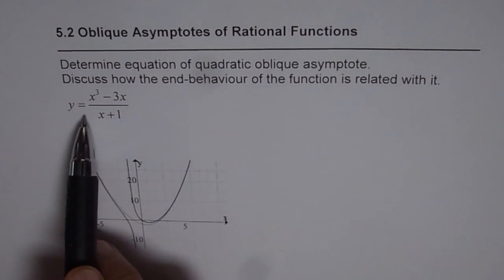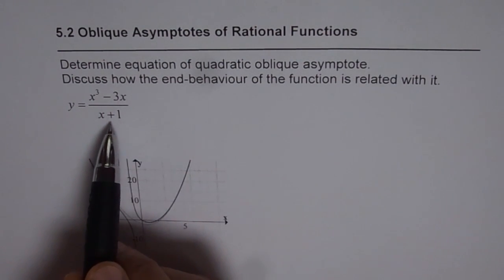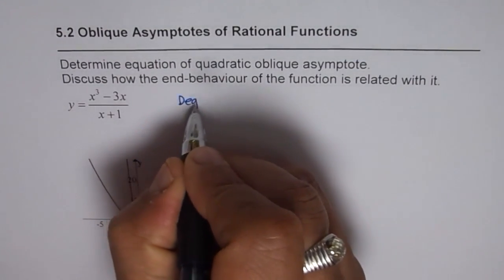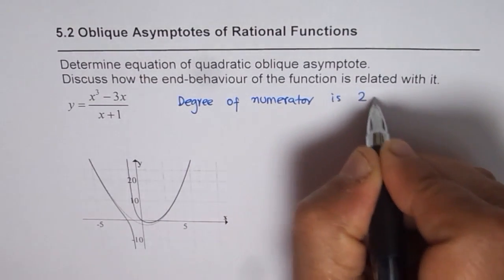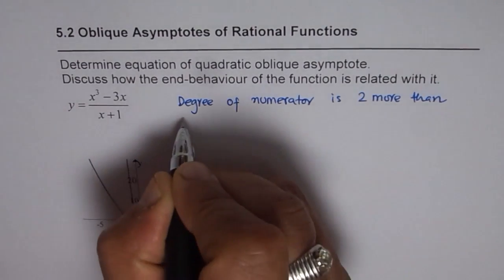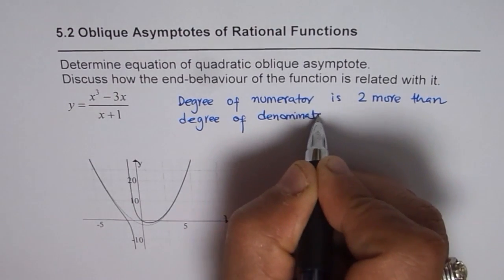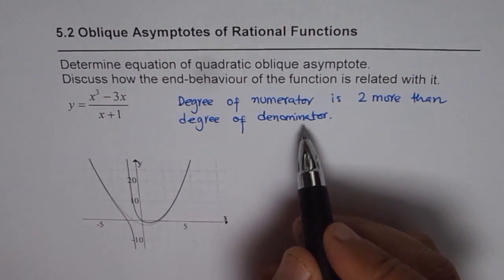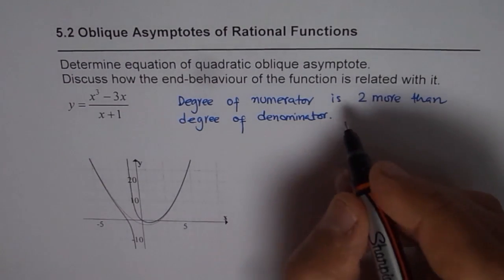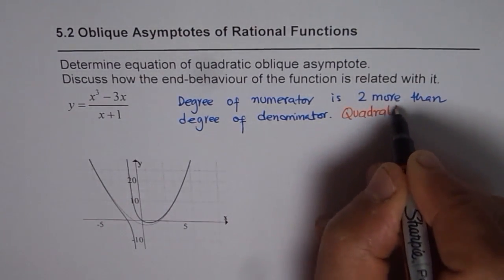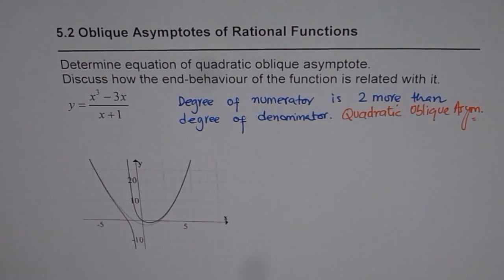We are given the function y equals x cubed minus 3x divided by x plus 1. The degree of the numerator is 2 more than the degree of the denominator. Since the numerator's degree exceeds the denominator's, we do not have a horizontal asymptote. Since it is 2 more, we do not have a linear oblique asymptote, but what we have is a quadratic oblique asymptote — and that is what we are going to discuss in this video.